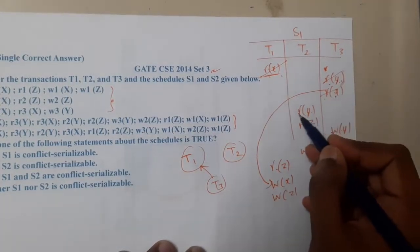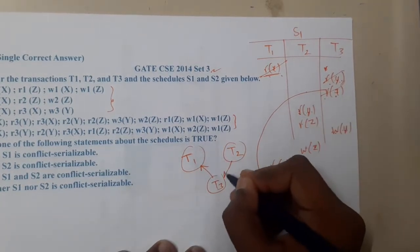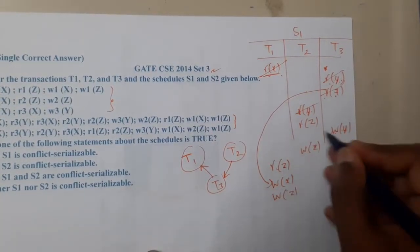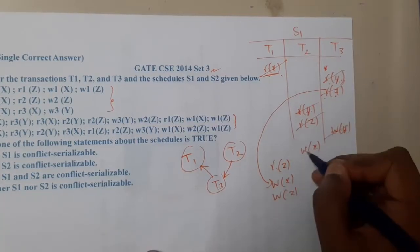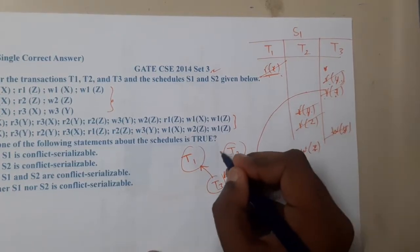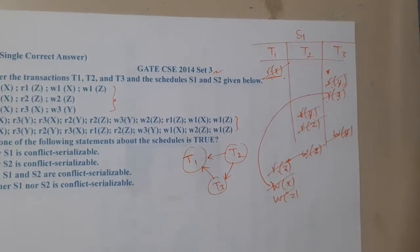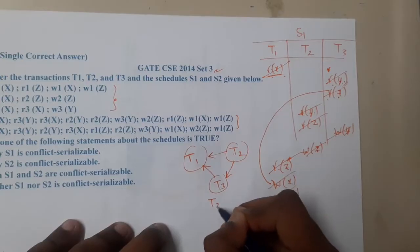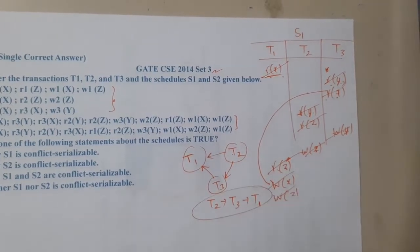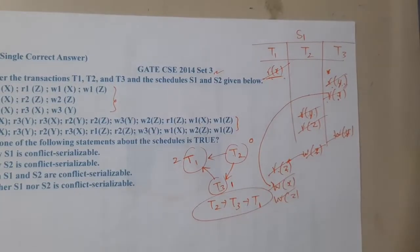Moving on: Read(Y) in T3 clashes with Write(Y) in T2, giving edge T2→T3. Read(Z) — no issue. Write(Y) — no issue. Write(Z) in T2 clashes with Read(Z) in T1, giving edge T2→T1. So all edges are done. The serializability order based on topological sort — incoming edges count zero first — gives us T2 → T3 → T1.